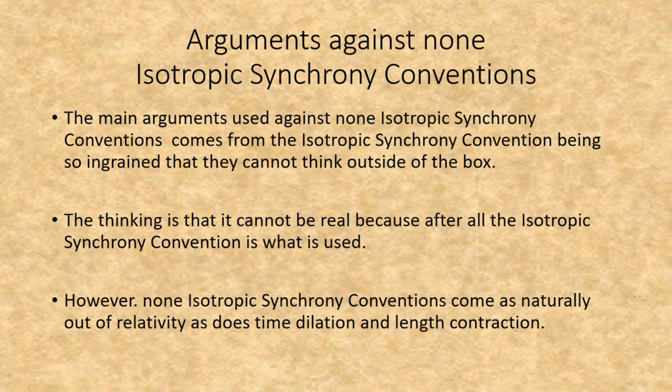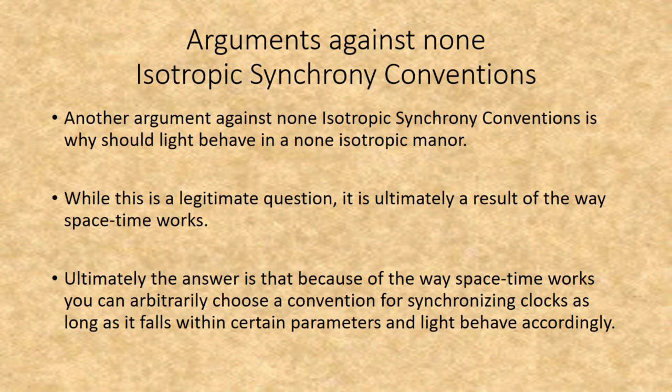The main argument used against non-isotropic synchrony conventions comes from the Isotropic Synchrony Convention being so ingrained that people cannot think outside the box — they insist it cannot be real because it is not what is commonly used. However, non-isotropic synchrony conventions come as naturally out of relativity as time dilation and length contraction. Another argument is: why should light behave in a non-isotropic manner? While this is a legitimate question, it is ultimately a result of how space-time works — you can arbitrarily choose a convention for synchronizing clocks as long as it falls within certain parameters, and light behaves accordingly.